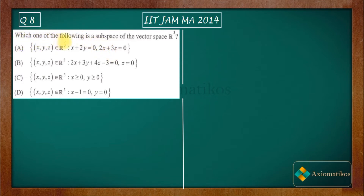Which one of the following is a subspace of the vector space R cube? So you have a vector space R cube and you have to find out the subspace. You have four options and among these four options, one is a subspace that you have to find out. So firstly, I will define subspace — the conditions needed for a space to be a subspace.